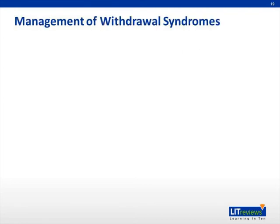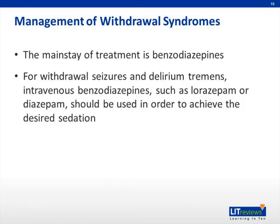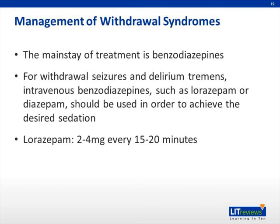How do we manage withdrawal syndromes? The mainstay of treatment is benzodiazepines. For withdrawal seizures as well as delirium tremens, intravenous benzodiazepines such as lorazepam or diazepam should be used to achieve the desired sedation. Dosages of lorazepam are 2–4 mg intravenously every 15–20 minutes. If diazepam is used, it can be 5–10 mg every 5–10 minutes.